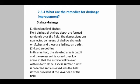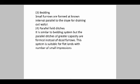The first surface drainage method is random field ditches. Shallow ditches are formed randomly over the field and depressions are connected by means of shallow channels. Next is land smoothening, where the elevated area is cut off and the excess soil is spread over the low area so that the surface will be evenly uniform on the slope. The excess surface runoff is collected and conveyed into field ditches. Next is the bending technique, where small furrows are formed at known intervals parallel to the slope to drain out water.